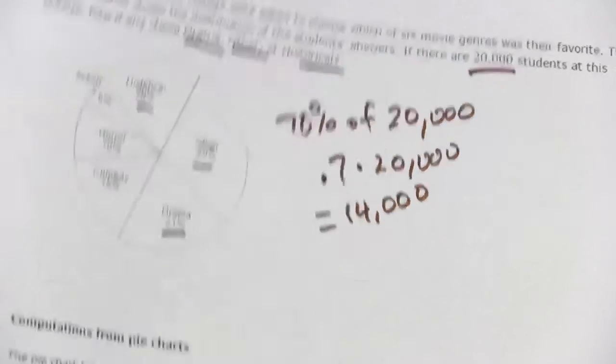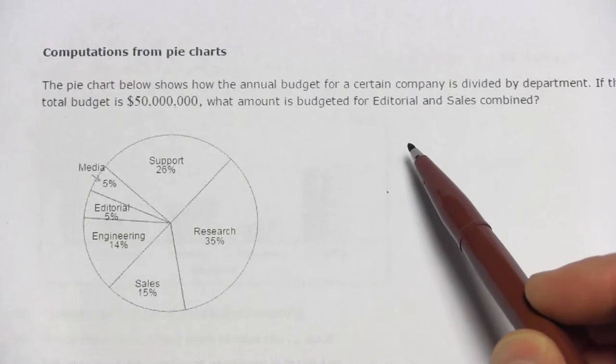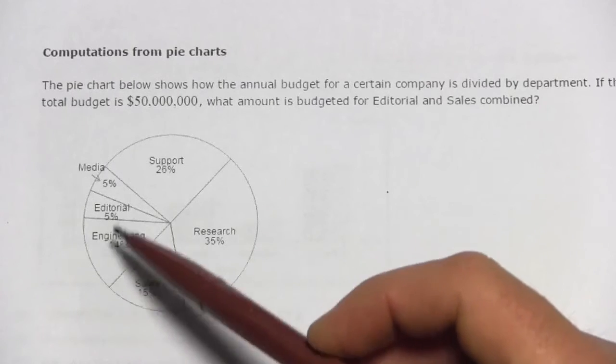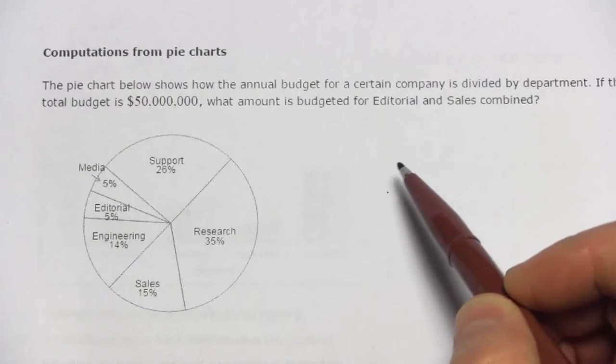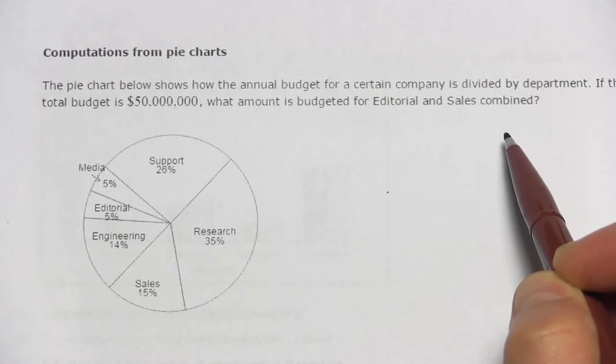All right, let's look at another one. This one says that the pie chart shows the annual budget for a certain company divided by department. They've got research, sales, engineering, et cetera. If the total budget is 50 million, what amount is budgeted for editorial and sales combined?